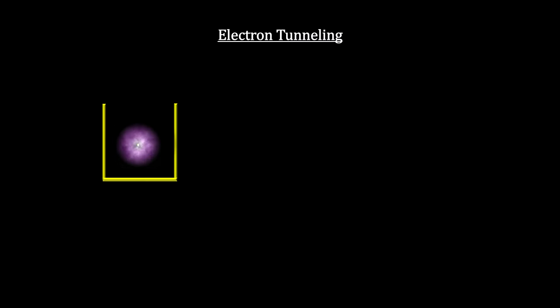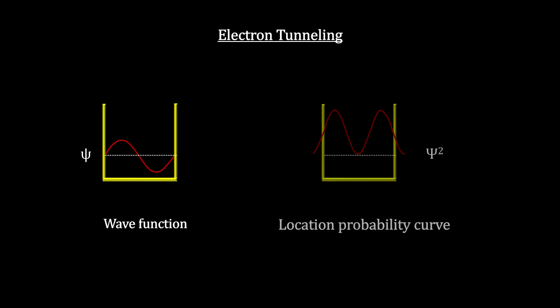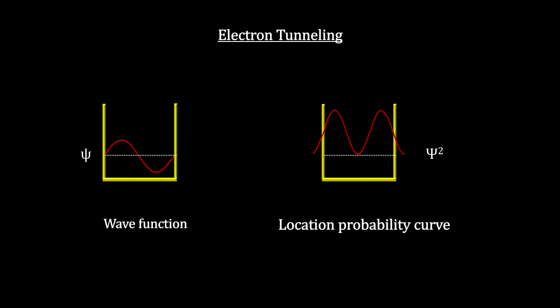A good way to illustrate this is to look at an electron in an energy well, too deep for it to get out. But remembering that the electron has a wave function that gives the probability of finding it at any given point, and some of those points, admittedly with very low probability, can be found outside the walls of the well, as if it had tunneled through the wall.